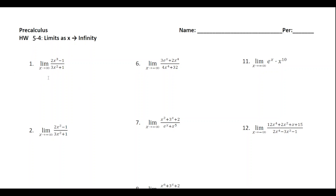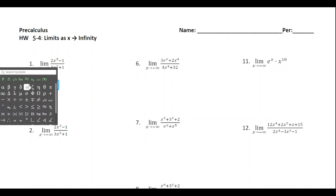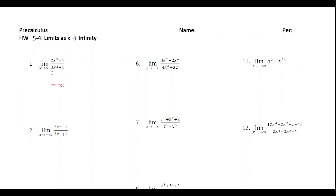On this homework we are trying to find limits as x approaches infinity. The general gist is that you want to look at both the numerator and the denominator of a rational function and compare the degrees of both. In future problems you won't necessarily have a polynomial — you might have some exponential functions on the numerator or denominator and we'll have to compare those as well.